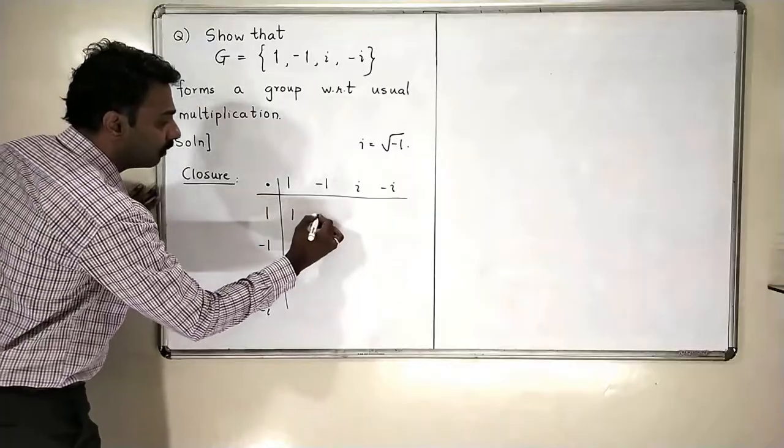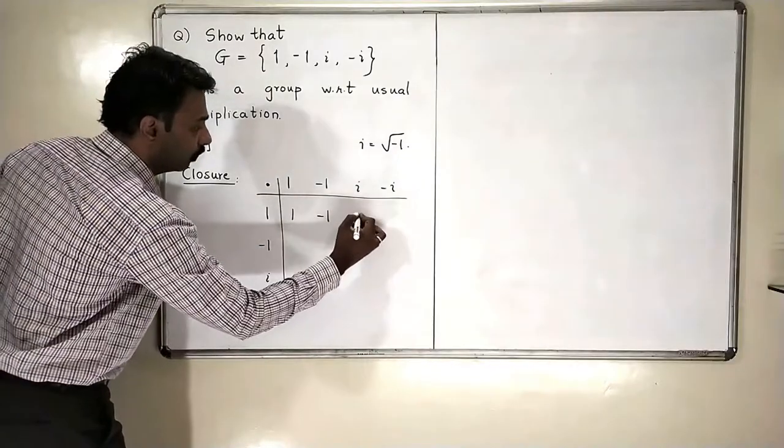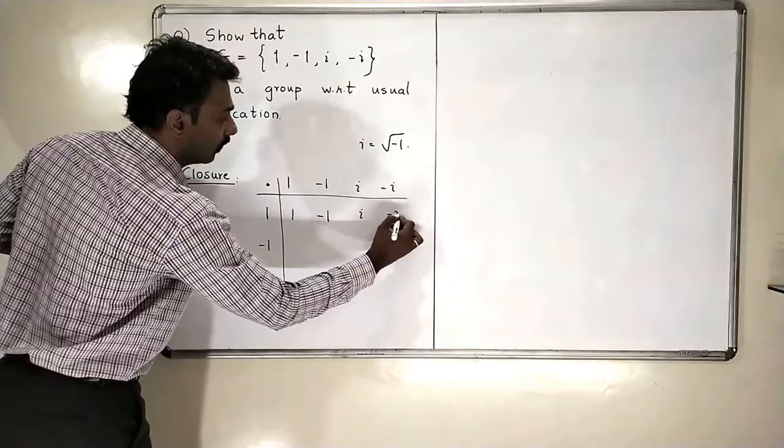1 into 1 is 1, minus 1, i into 1 is i, and 1 into minus i is minus i.